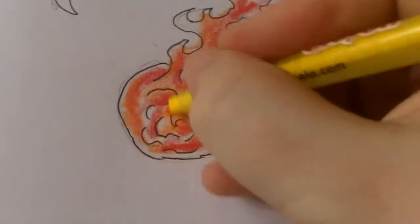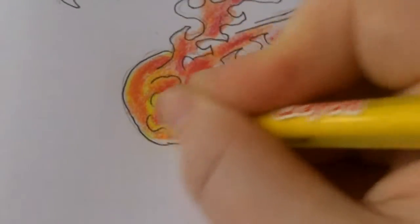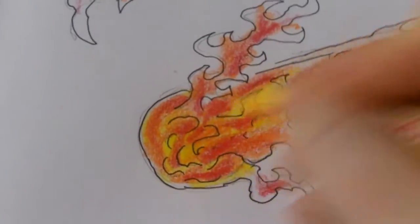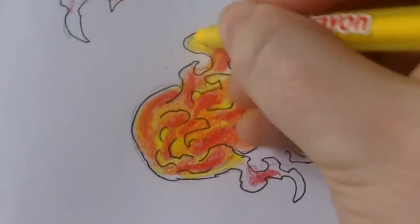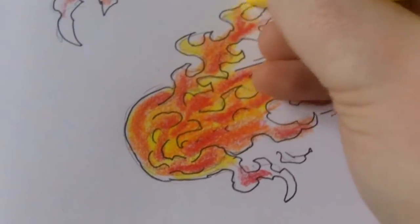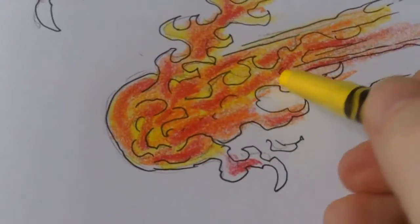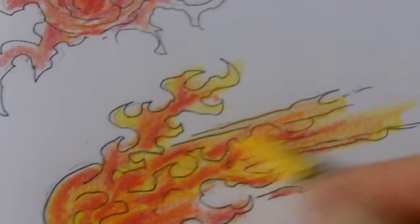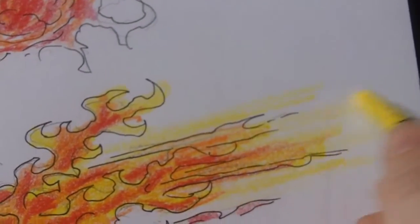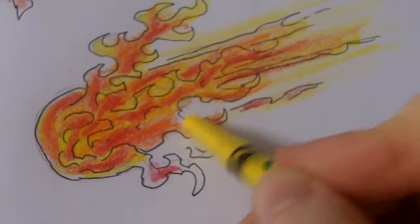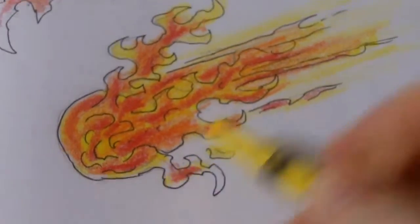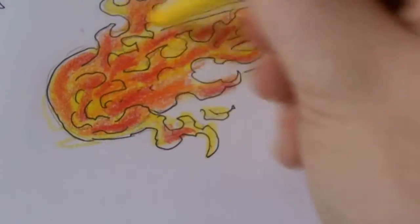And we'll take the yellow, just have to go over certain areas there. I'll draw some extra flames just to help with the movement there. A little bit over there but I'm just rushing.